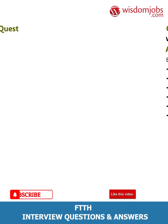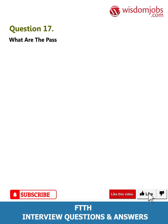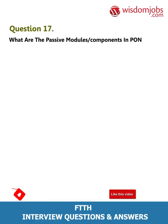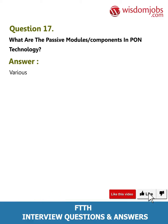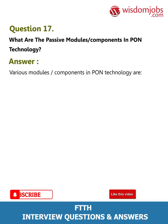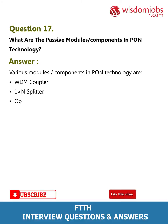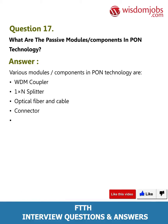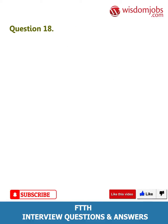Question 17: What are the passive modules/components in PON technology? Answer: Various passive modules and components in PON technology are: WDM coupler, 1xN splitter, optical fiber and cable, connector, ODF/cabinet/sub-rack.